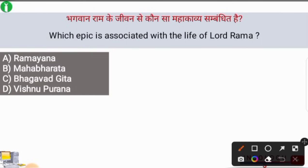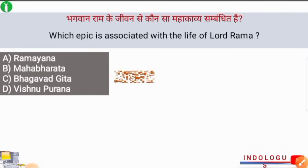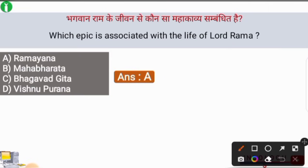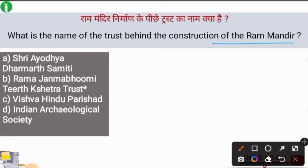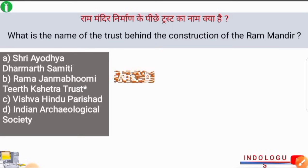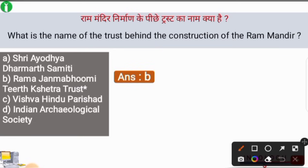Which epic is associated with the life of Lord Rama? The correct answer is option number A, i.e. Ramayana. Ramayana is one of the greatest epics, which is related to the life of Lord Rama. What is the name of the trust behind the construction of Ram Mandir? The correct answer is option number B, i.e. Ramjanmabhumi Tirth Chhetra Trust — that is the name of the trust behind the construction of the Ram Mandir.